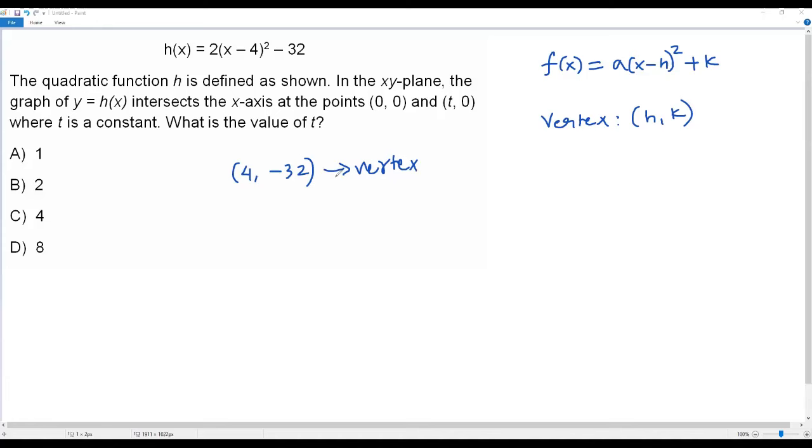Now let's consider the two x-intercepts (0, 0) and (t, 0) for the quadratic function h(x). Whenever we have two x-intercepts for a quadratic function and find the average of the x-coordinates at the x-intercepts, it must be equal to the x-coordinate of the vertex.